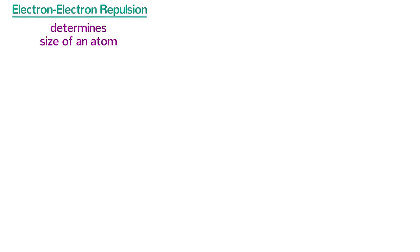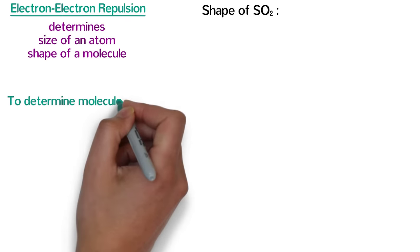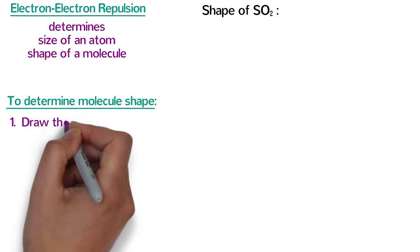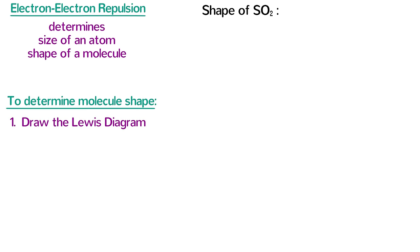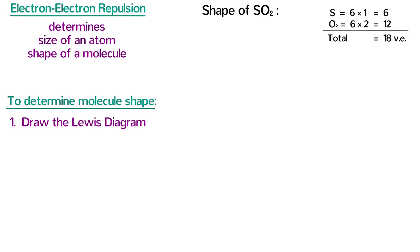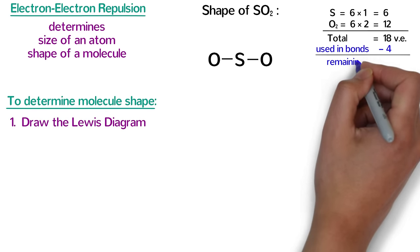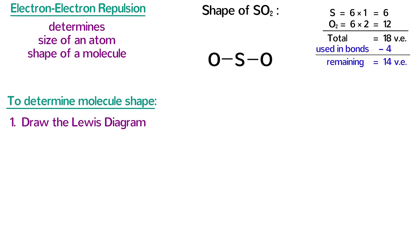That same principle also determines the shape of a molecule. Let's see how this works in the example of sulfur dioxide. The first step in determining the shape of a molecule is to draw the Lewis diagram. One sulfur has 6 valence electrons, and the two oxygens have 6 times 2 or 12 valence electrons, which gives sulfur dioxide a total of 18 valence electrons. Because there is only one sulfur, we put sulfur in the middle surrounded by 2 oxygens with single bonds to the sulfur. Each bond has 2 electrons, so we have used up 4 electrons so far, which means we have 14 electrons remaining for lone pairs.